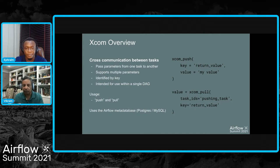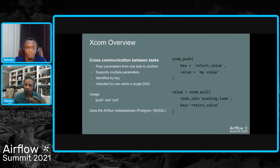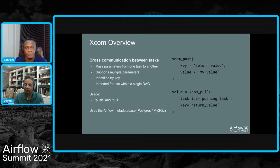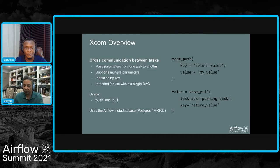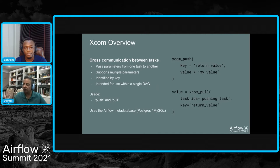From a code standpoint, if you look on the right-hand side, you'd see the pattern reflected in the code: effectively an XCOM push using a key value and passing the data, because you can pass multiple parameters from a preceding task. Then pulling data in the succeeding task — specifying which task you're pulling from, what parameter to use — and then the succeeding task can start operating on that data.